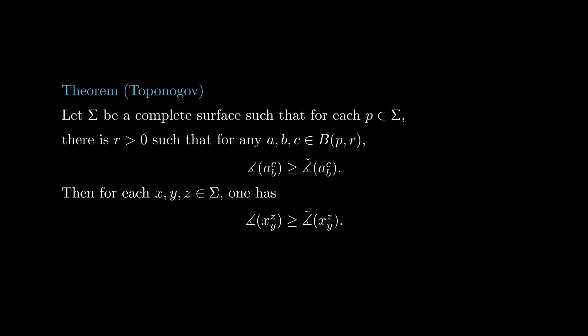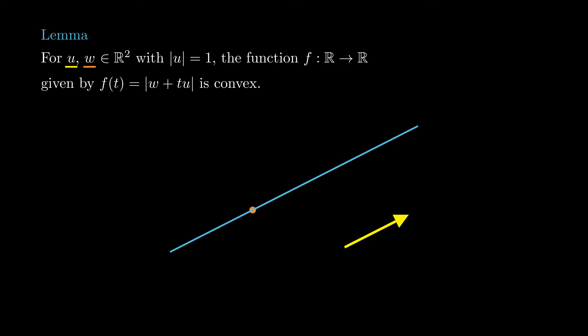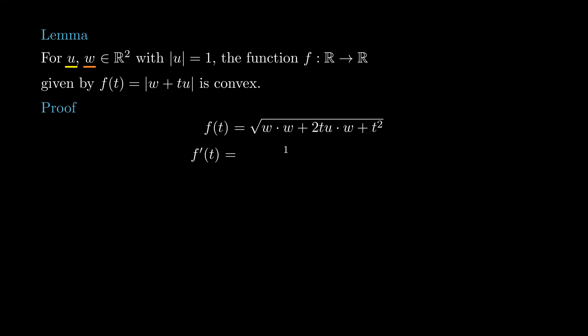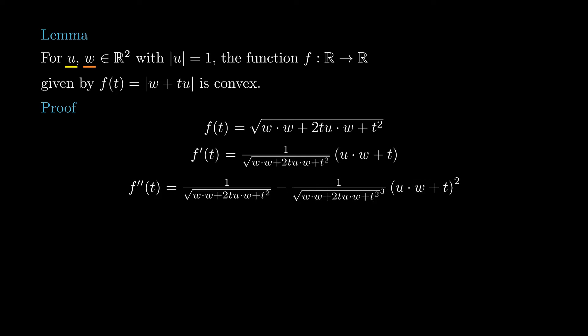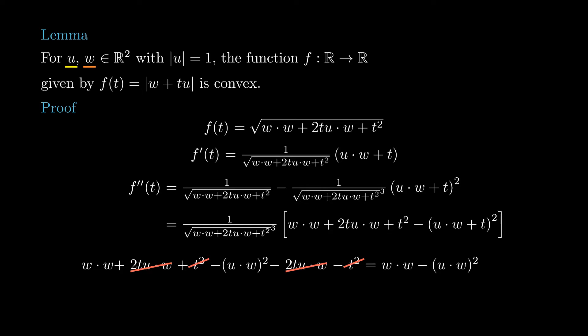Now that we are done with the local version, the problem of obtaining a global result from the local one is quite interesting, and is often called the Toponogov theorem. We will actually need a little bit of calculus first. Take a point w in the plane, a unit vector u, and consider the line gamma passing through w in the direction u. It turns out that the norm of gamma is a convex function of t. We just compute the derivatives — the first derivative uses the chain rule, and to compute the second derivative we use the quotient rule. Since all we want to show is that f is convex, we just need to show that the numerator is non-negative. After cancelling out most terms, this is just the Cauchy-Schwarz inequality.